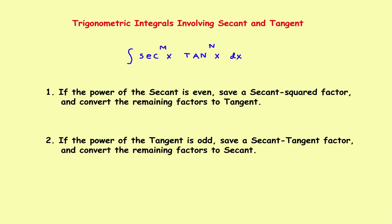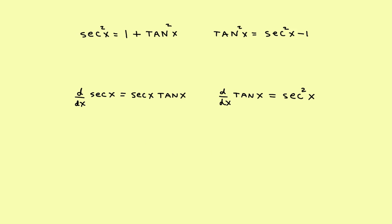Before we do the problem, note you'll need a couple more identities and derivatives. Last time we worked with sine squared equals 1 minus cosine squared. This time it'll all be in terms of secant and tangent. A reminder from your trig days: secant squared equals 1 plus tangent squared, and tangent squared equals secant squared minus 1. You'll also need the derivatives: the derivative of secant is secant times tangent, and the derivative of tangent is secant squared.